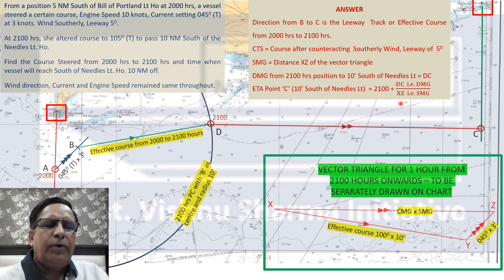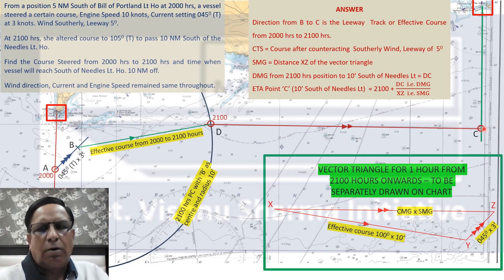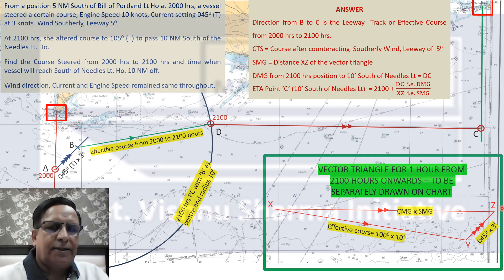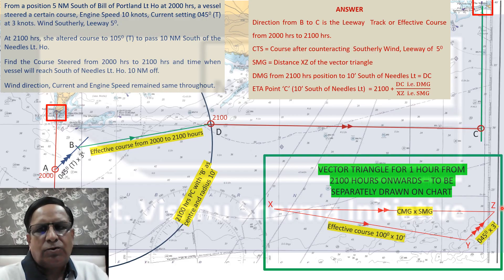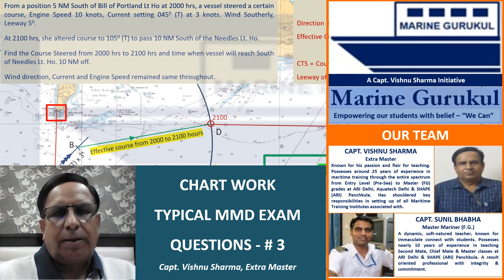The vector triangle was drawn separately because the Needles Light is right at the border of the chart with no space to the right. If there were more room, the triangle could have been drawn at C — allowing for effective course, then current, getting the CMG and extending it backwards. Since there was no space to the right of the Needles Light on this chart, the vector triangle was drawn separately.